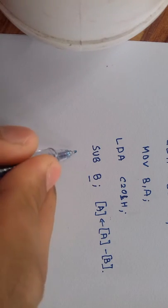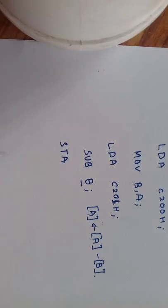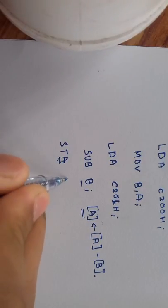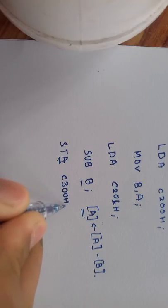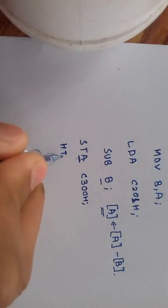Now, the program, now we have to store the content of an accumulator to desired address that is C300H. This completes our program.